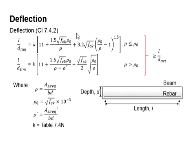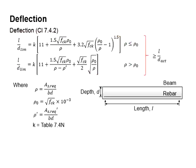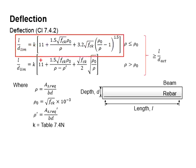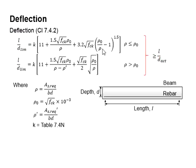First of all, you need to decide which equation to use by checking rho against rho-naught. Once you have decided, substitute the relevant values into the equation and check that your L/D limit is always greater than the actual L/D. The actual L/D is obtained by dividing the total length of the member by the depth of the member.